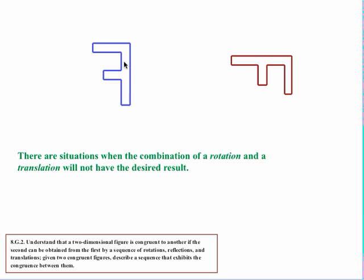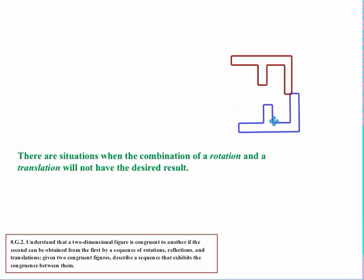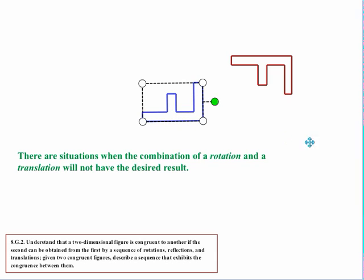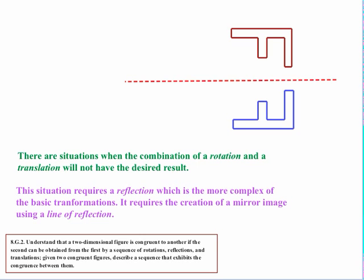There will be situations where the combination of a rotation and a translation isn't going to get the desired result. For example, if I rotate this around and then slide it, I can't get one to fit exactly over the other. This situation requires a reflection, which is the more complex of the basic transformations. What's needed is the creation of a mirror image using what's called a line of reflection. One problem is that it's hard for students to visualize what's happening in two dimensions, so this would be a good point to do some reflections using solid concrete figures.